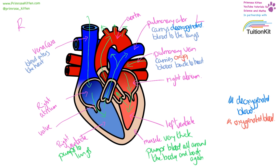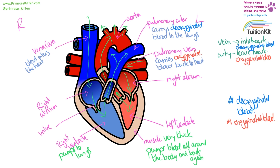The pulmonary vein carries oxygenated blood. Now you'll notice there's something slightly different about these vessels. Normally veins go into the heart and arteries leave the heart. All veins normally carry deoxygenated blood, and all arteries normally carry oxygenated blood — except for the pulmonary artery and the pulmonary vein. The pulmonary artery is leaving the heart but it is carrying deoxygenated blood; the pulmonary vein is coming into the heart but it is carrying oxygenated blood. It is important to remember that exception to the normal rule.